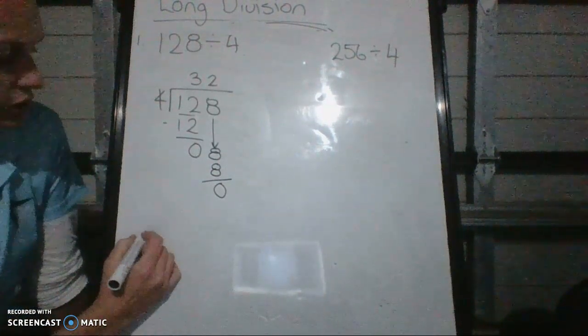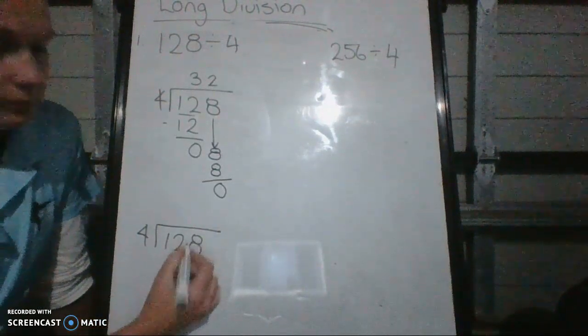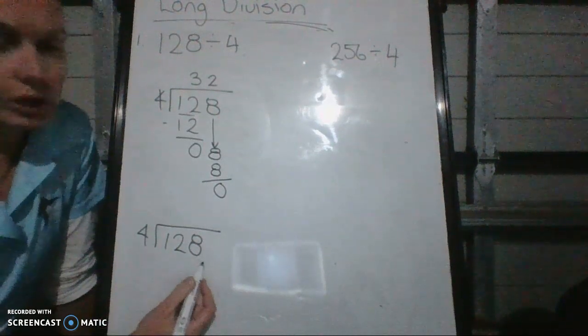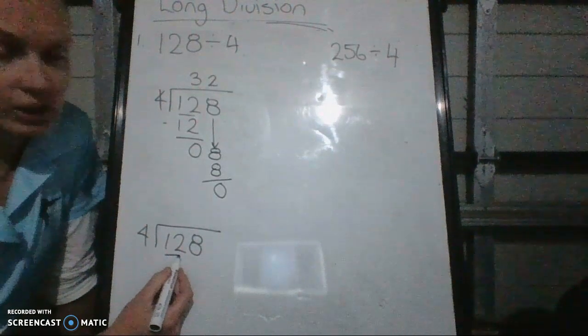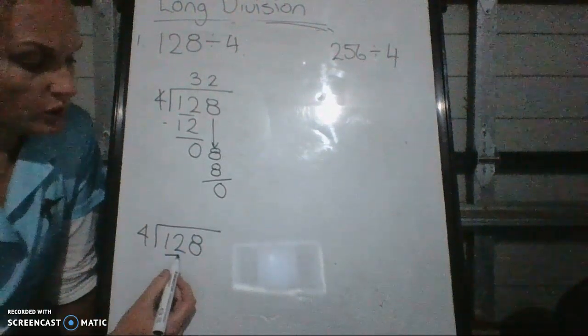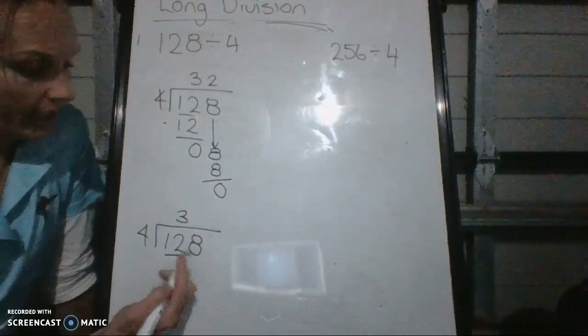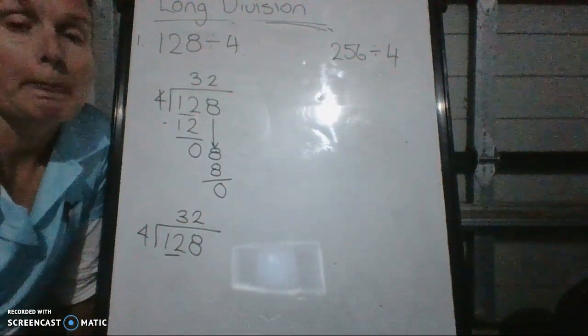Short version. Work your way across. Start at the 1, work your way across. So 4 goes into 1, you can't do. But then you're using the 12. So 4 goes into 12 3 times. No, they go evenly. And then you go 4 goes into 8 twice.